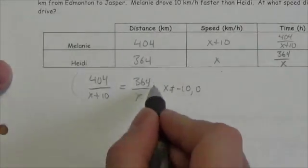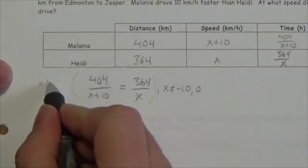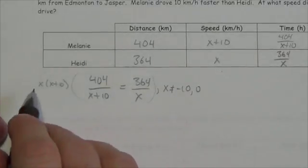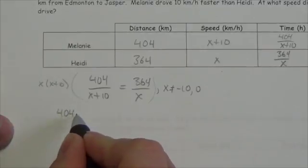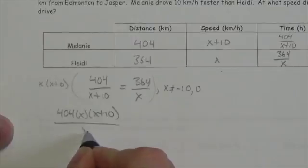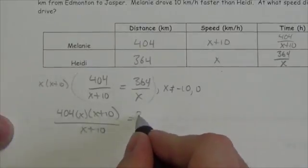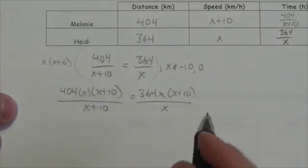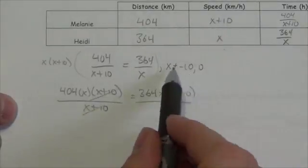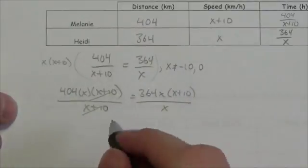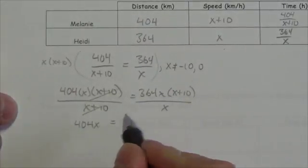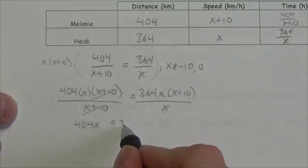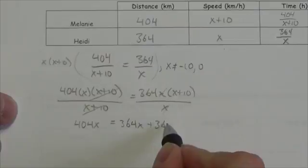Multiply the whole equation through by the common denominator, which is the product of the two denominators: x times (x plus 10). This gives 404x(x+10) over (x+10) equals 364x(x+10) over x. The (x+10) terms cancel on the left since x ≠ −10, leaving 404x. The x's cancel on the right since x ≠ 0, leaving 364x plus 3640.